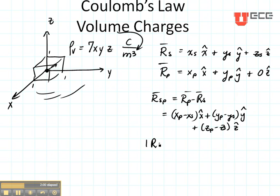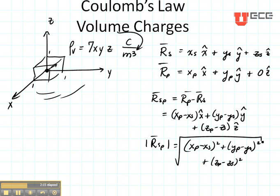minus ZS in the Z direction. The magnitude of this vector is XP minus XS squared, YP minus YS squared, ZP minus ZS squared. Take the square root.